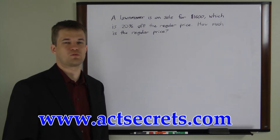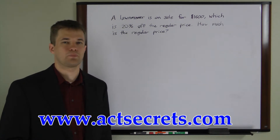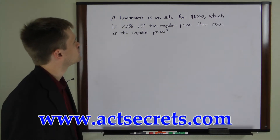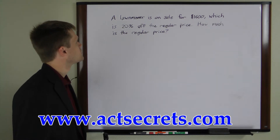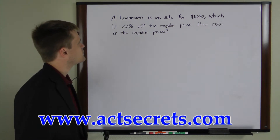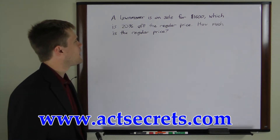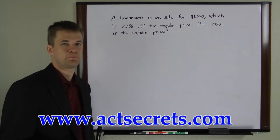Here's an example of one of the types of problems you may encounter on your exam. A lawn mower is on sale for $1,600, which is 20% off the regular price. How much is the regular price?